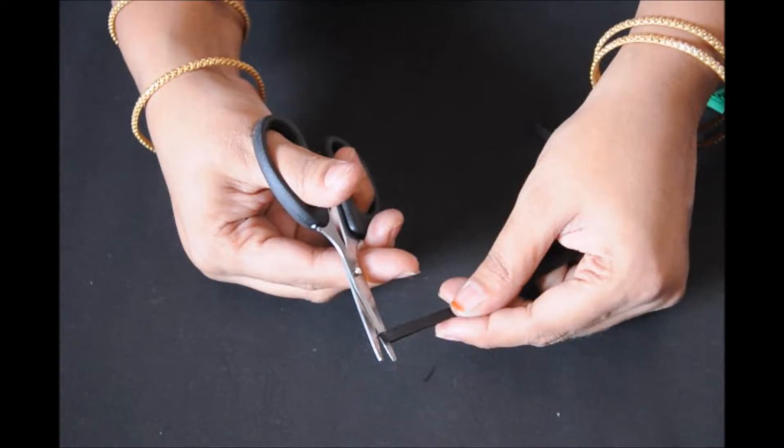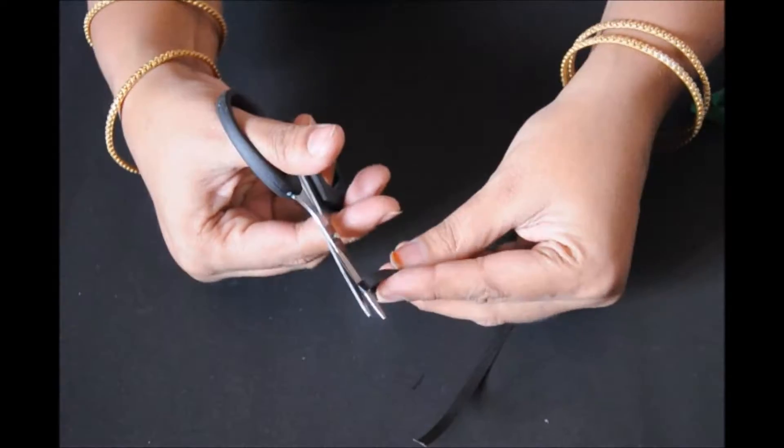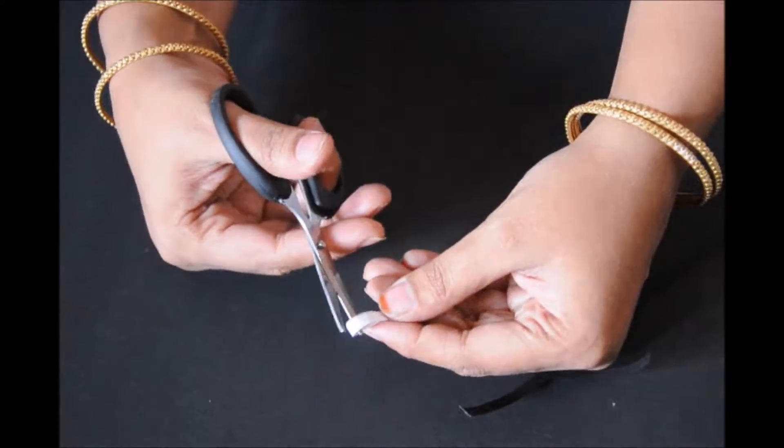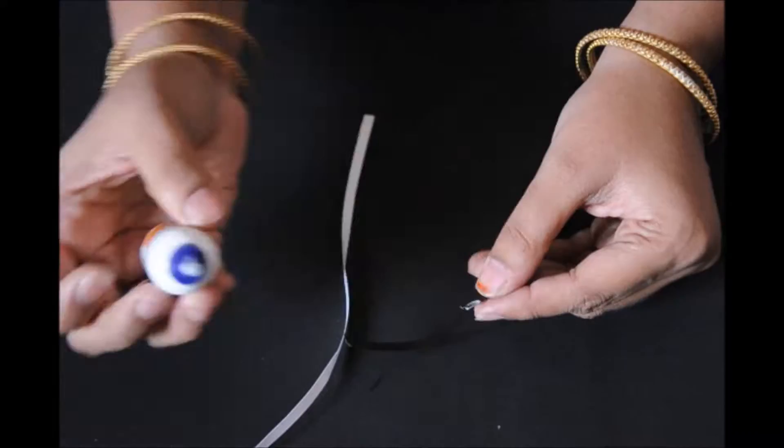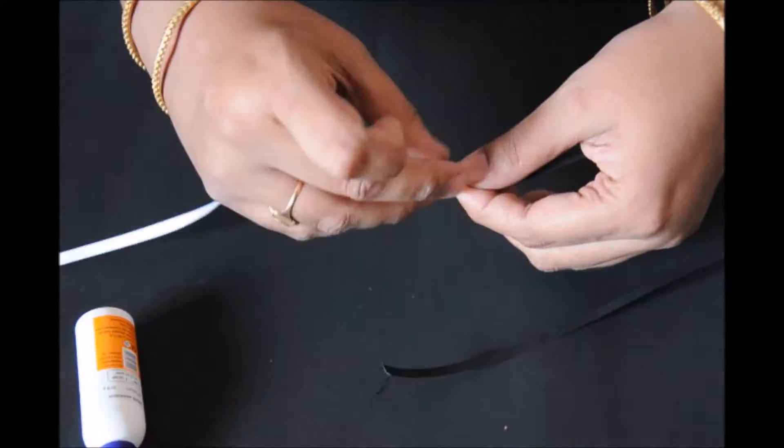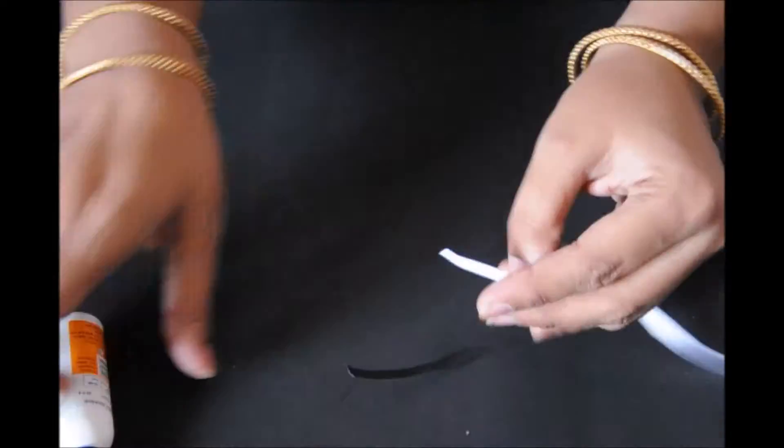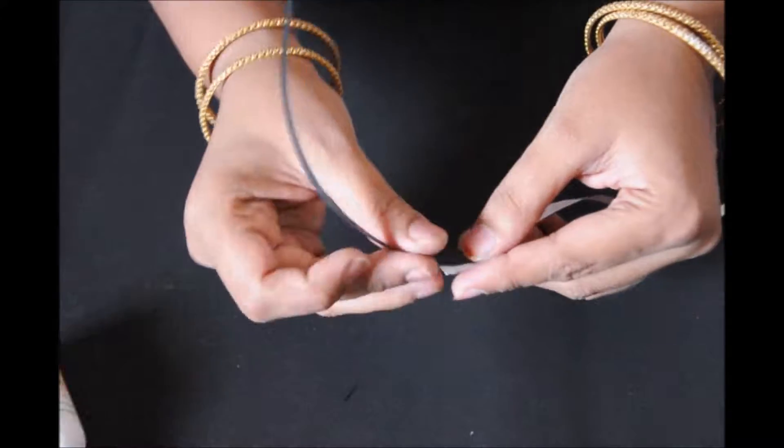Cut the black color quilling strip into half, again cut it into half. Cut the white color quilling strip into half. For each eye, I am going to use one fourth of the quilling strip of black, join with half of white, and again with half of black.